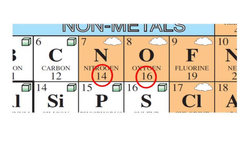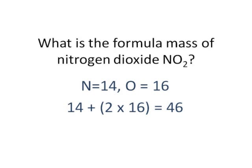Look at your periodic table, find nitrogen, find the mass, it's the bigger number. Oxygen, mass is the bigger number. Then you can work out your mass.